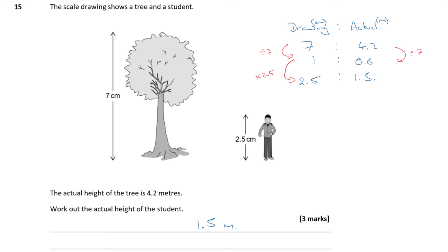Just use your knowledge of the real world to catch any silly mistakes. For example, if you had an answer of 300 metres for a student's height, you'd know that's not reasonable. Use real-world sense to spot errors.